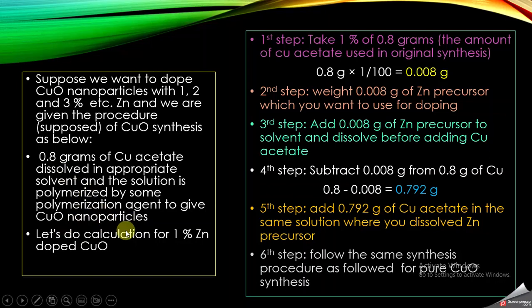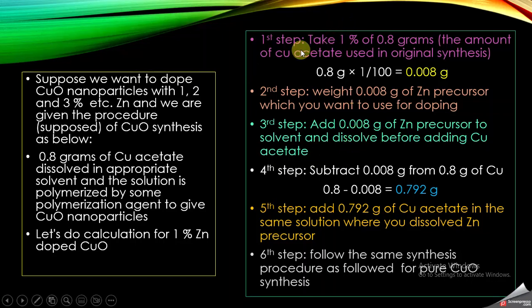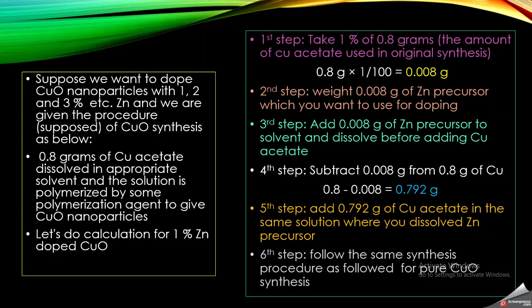Now if you have the procedure and you want to do calculations for 1% zinc doping in copper oxide — or any other dopant, the calculations will be the same. You will follow these 6 steps shown on the right side. The first step is that you find out 1% of 0.8 grams of the copper precursor used in the synthesis of pure copper oxide. Taking 1% of 0.8 grams gives you 0.008 grams.